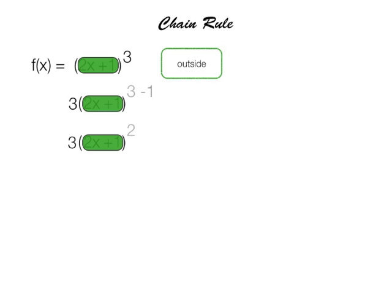Obviously, 3 minus 1 is 2. Let me make that black so you can see that 2 a little bit better. There you go. Now this becomes the derivative of the outside.